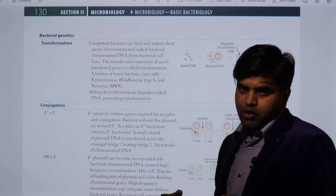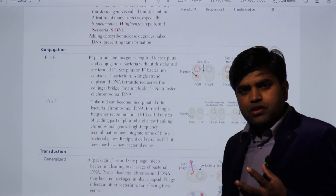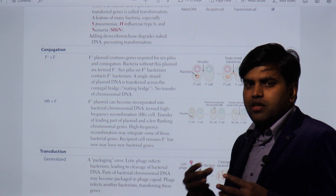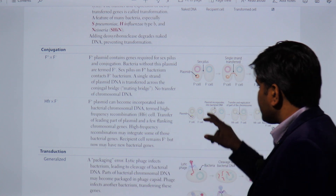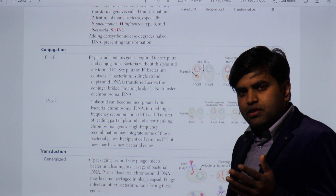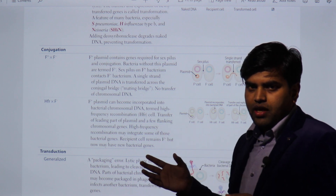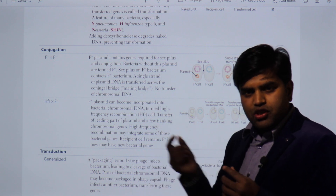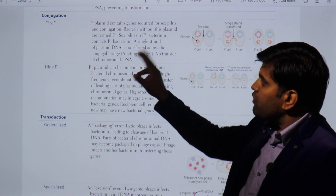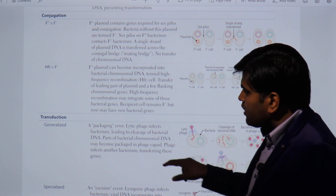Next, conjugation is the process by which an F-plus bacterium transfers genetic material to an F-negative bacterium through a conjugation tube. This is another mechanism of genetic transfer. There are two forms: F+ to F- and Hfr to F-.